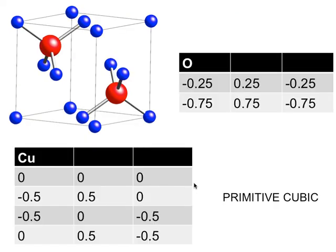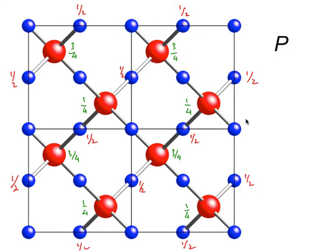These are the atoms and their locations. If I define my origin here, these are the coordinates of the copper atoms and these are the coordinates of the oxygen atoms, which are placed at every single lattice point of a primitive cube to generate the structure. Now I'm going to generate the space group symbol. All space group symbols start with the lattice type — here we have P for primitive. It's a primitive lattice and we know what the motif is.